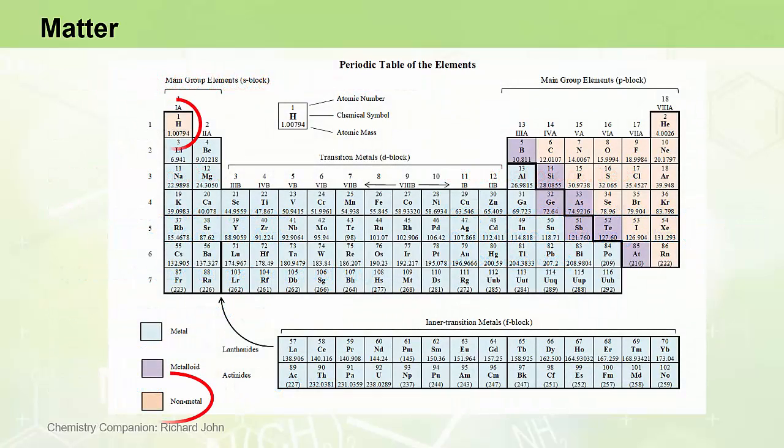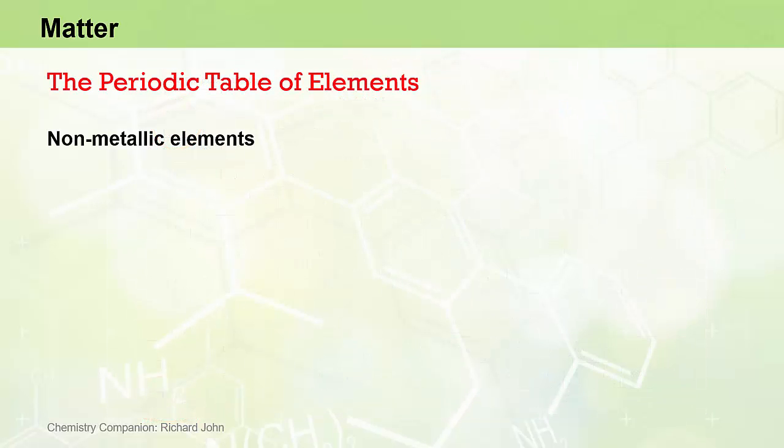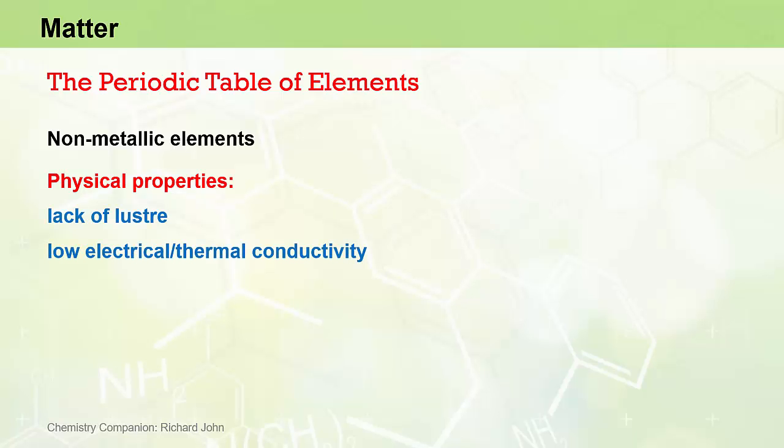Hydrogen is on the left-hand side of the periodic table, but it is a non-metal, so it is an exception as far as its position in the periodic table is concerned, with the rest of the non-metals appearing in the upper right-hand corner of the periodic table. Non-metals share similar physical properties, including a lack of luster, low electrical and thermal conductivity, and they tend not to be very malleable or ductile.